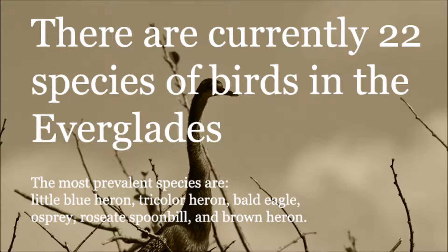The birds group has 22 members, the most prevalent of which are the little blue heron, tricolor heron, the bald eagle, the osprey, the roseate spoonbill, and the brown heron. All the animals in this group feed primarily on fish or worms.